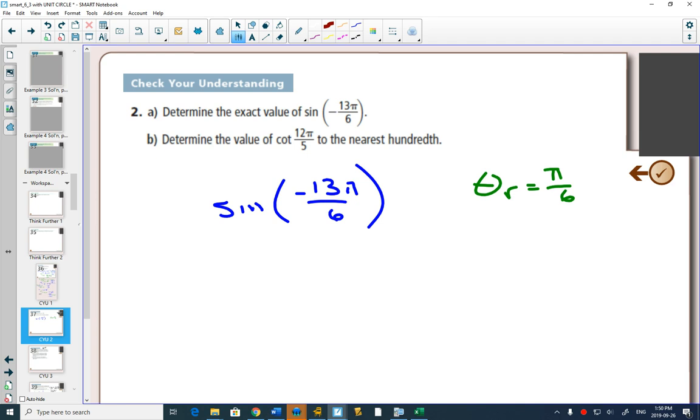What quadrant is negative 13 pi over 6 in? Well, negative 13 pi over 6 is negative 2 and 1/6 pi. So it's going to be in quadrant 4, because if you went negative 2, that would get you to your positive x-axis. And then a sixth more, less than half, is going to end in quadrant 4.